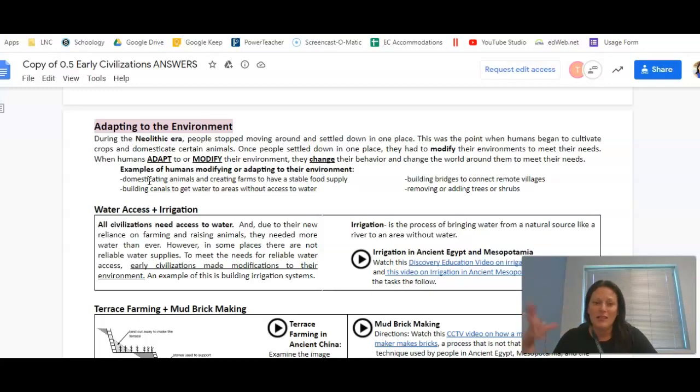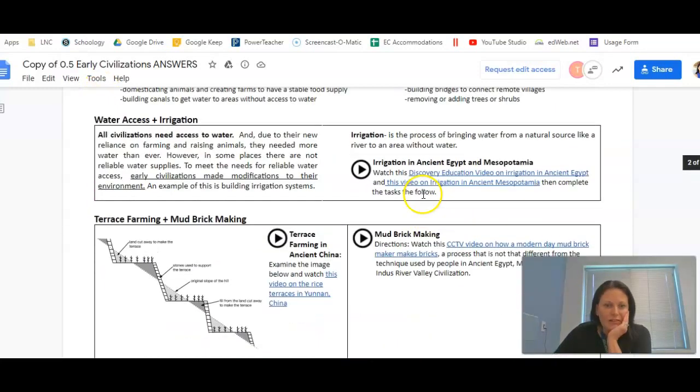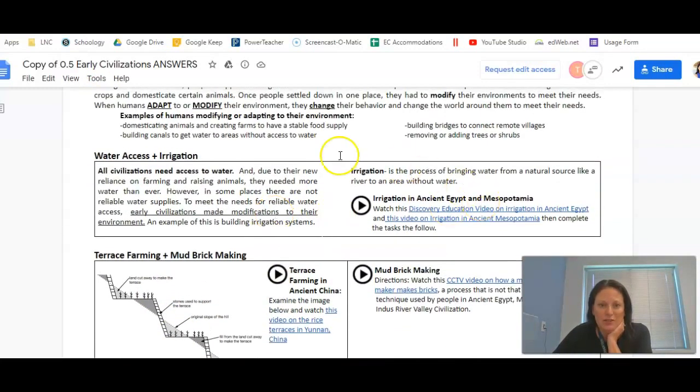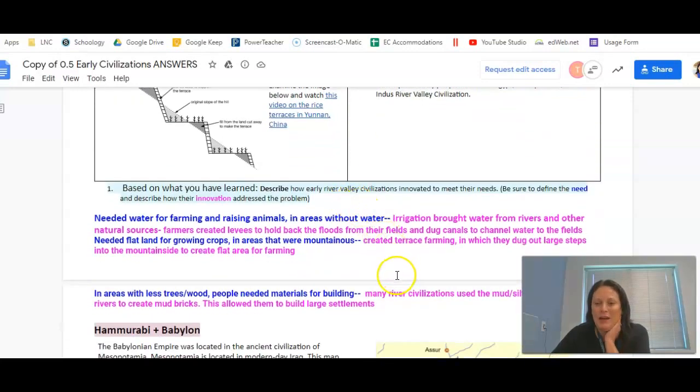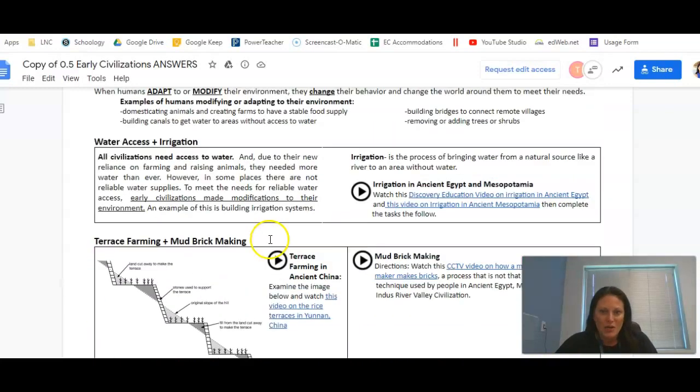Once people were able to settle and literally lay roots somewhere, they started cultivating crops and domesticating animals and starting to solve the problems that their world is presenting to them. So in this first video that you should have watched was on irrigation. What was the problem and how did they use their environment to solve the problem? They needed water for farming and raising animals in areas without water, so they solved that problem by using irrigation. They brought water from rivers and other natural sources, farmers created levees to hold back the floods from their fields and dug canals to channel water to the fields.